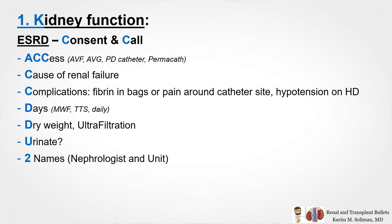Axis: is it an AV fistula, AV graft, or PD catheter? What's the cause of renal failure? Any complications like fibrin in bags, pain around the catheter site, or hypotension on hemodialysis? What are the days of dialysis? What's the dry weight and the typical UF? Is the patient still making urine? Finally, the name of the nephrologist and the unit where the patient dialyzes.